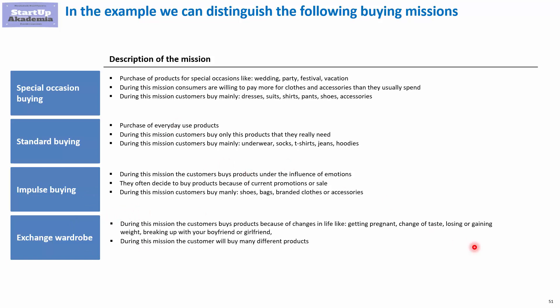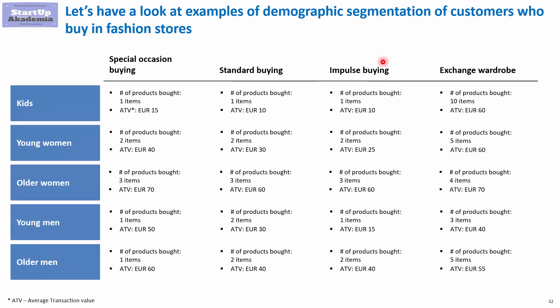From our internal loyalty program, transactional data, and a little bit of consumer research, we got a detailed description of each and every segment as well as mission. For example, when it comes to special occasions buying for kids, we would have just one item being bought on average, and the transaction value would be around 15 euro. We have described every sub-segment, which is a combination of the segments and the purchasing mission.